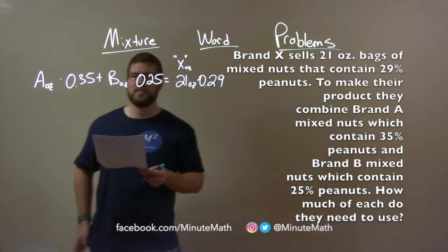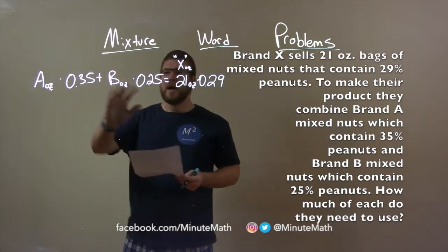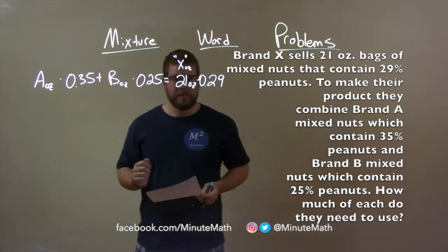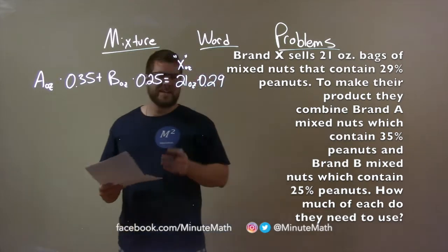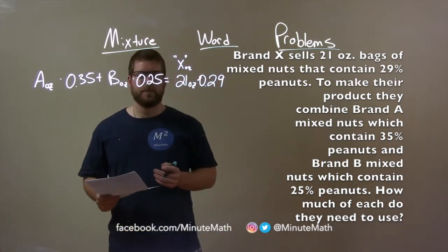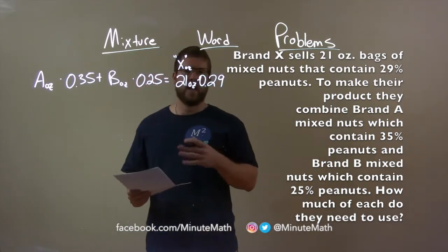I almost got ahead of myself. But, notice that we have an equation here with two variables, A and B. When we have that, we can't solve that directly. So, what we need to do is find another equation.